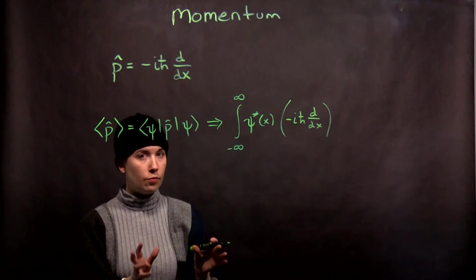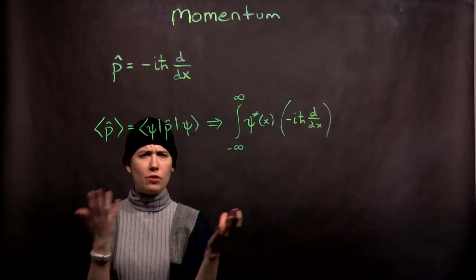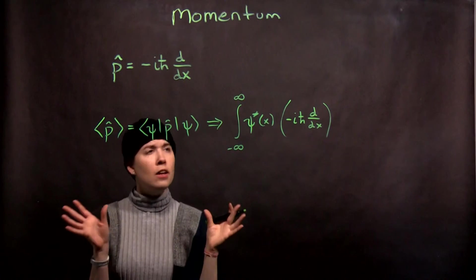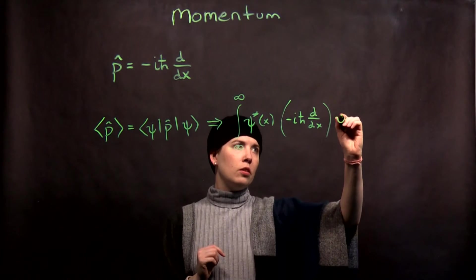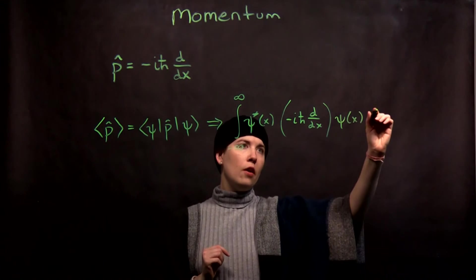And the order matters now. So be careful. We know with matrices you can't just swap the order whatever you want. Same here. Keep the order initially. So now I have psi of x and then this is dx.